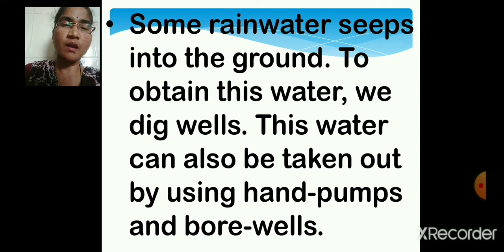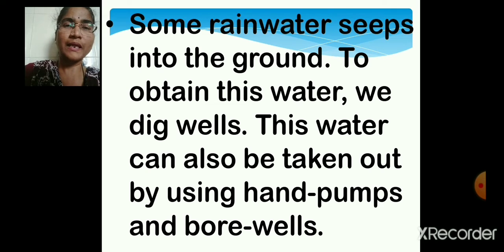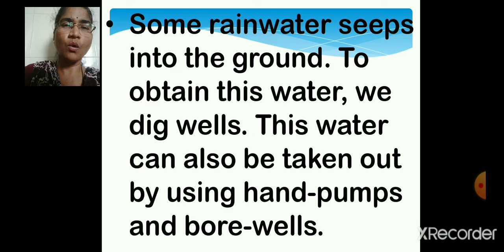Some rain water seeps into the ground. Seep means to pass slowly through small openings or cracks - that means rain water goes slowly inside the ground. To obtain this water, we dig wells. Why do we dig wells? We dig wells to obtain underground water which seeped into the ground through small openings in the soil or rocks.